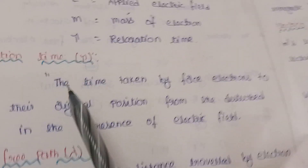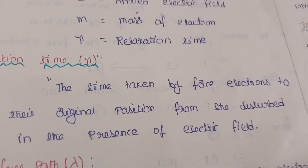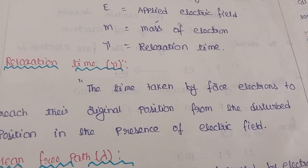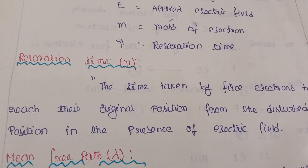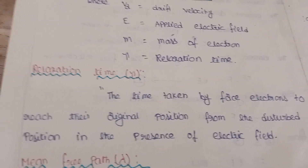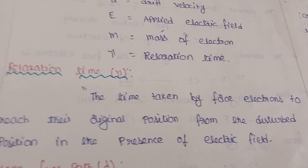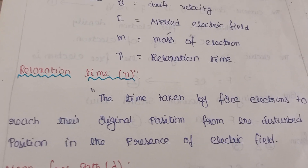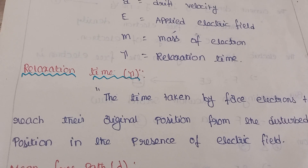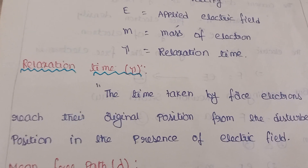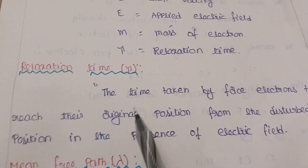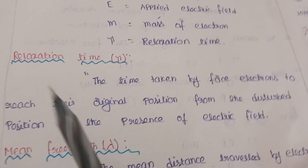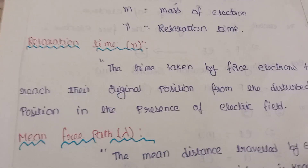Relaxation time is defined as the time taken by the free electrons to reach their original position from the disturbed position in the presence of an electric field.